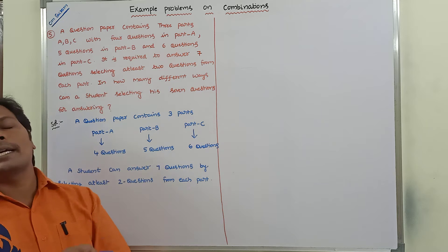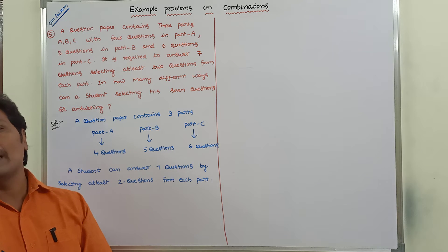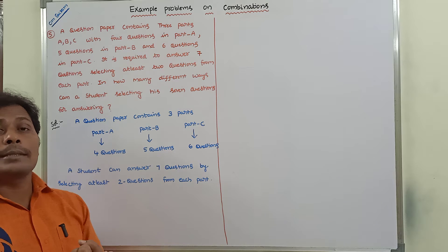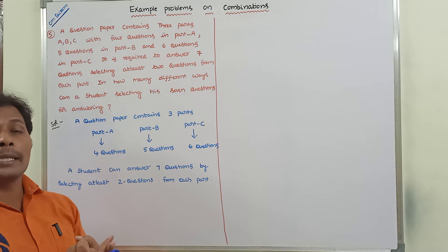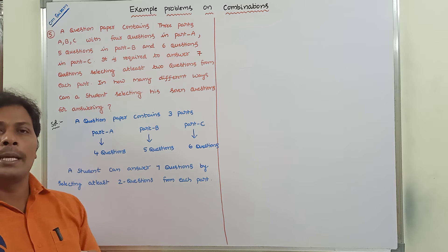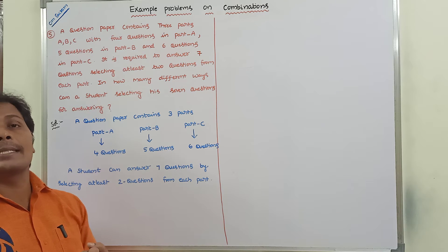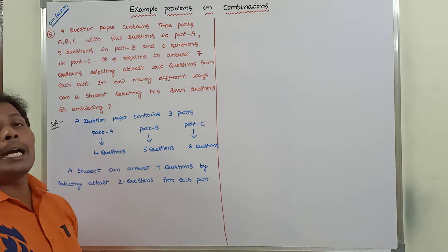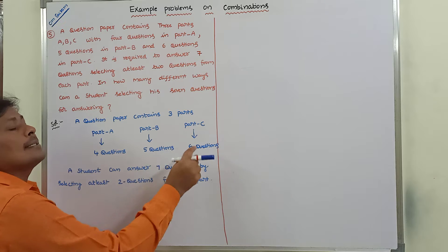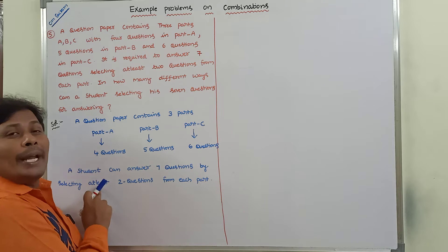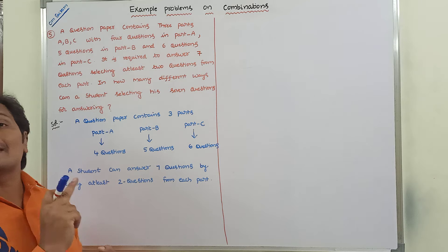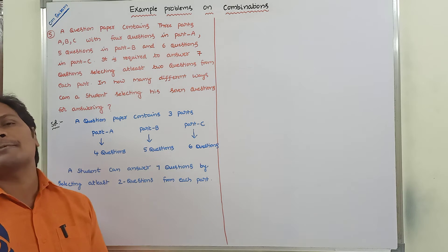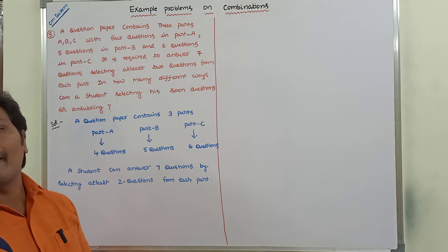The given data in the problem is: the question paper contains 3 parts — part A, part B, and part C. Part A contains 4 questions, part B contains 5 questions, and part C contains 6 questions. A student can answer 7 questions by selecting at least 2 questions from each part for answering.